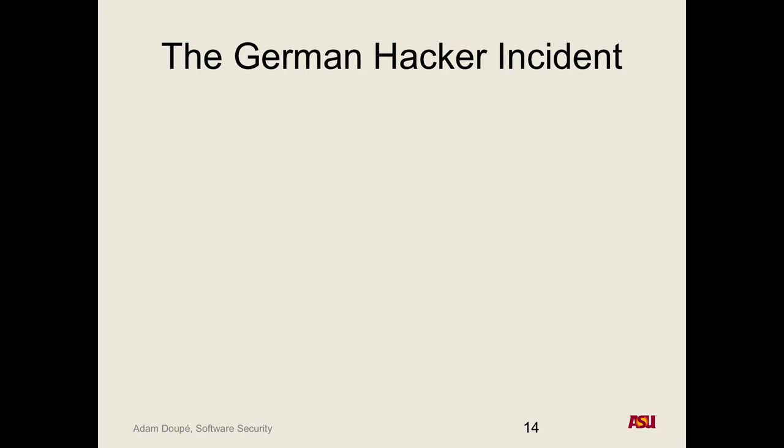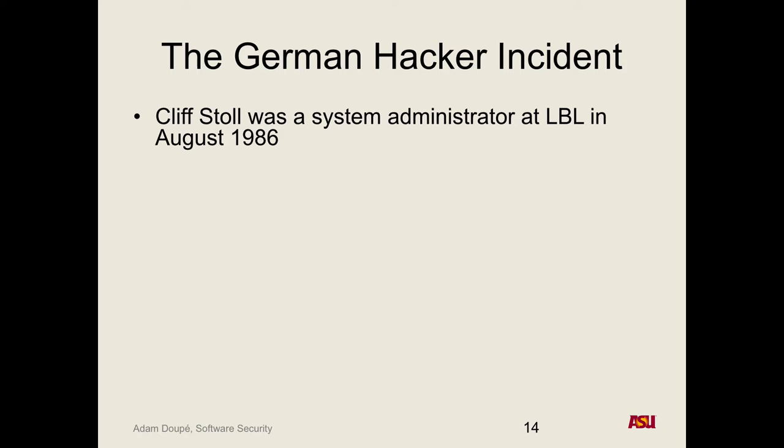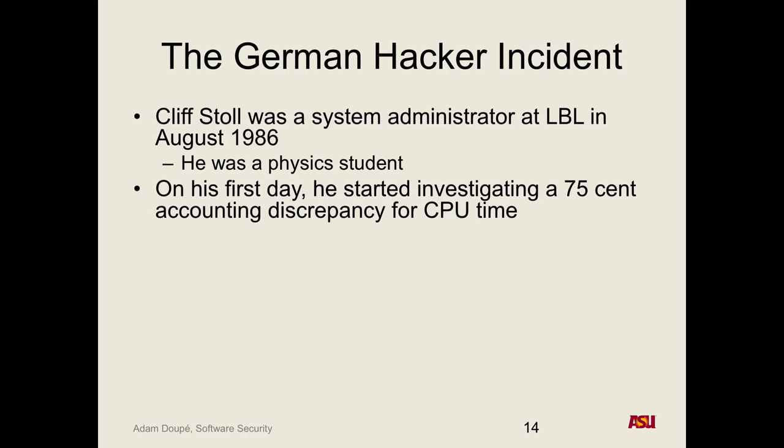The German Hacker Incident — which sounds like a really cool movie. Cliff Stoll was a system administrator at Lawrence Berkeley Lab — actually a physics grad student, not a computer scientist. There wasn't even really a concept of security as a field back then. On his first day, he noticed a 75-cent accounting discrepancy for CPU time. Back on these big systems, you paid for the time you were using — actually similar to modern cloud computing like Amazon, where we now pay per hour for compute time.